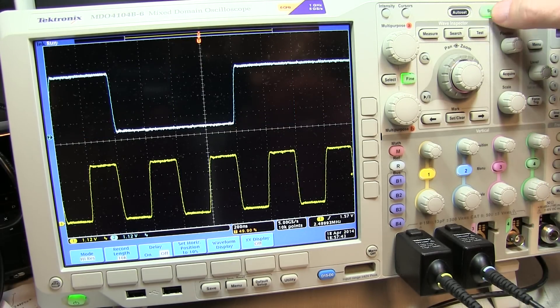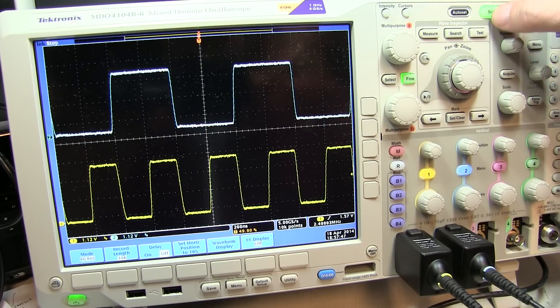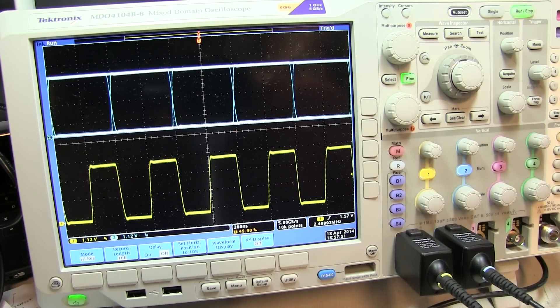If I hit the single button, I can kind of see the same thing. Each time I do a single trigger, I'm grabbing different bits at different points in time. So when running kind of at full speed, all those bits lay on top of each other, and that's what creates the eye pattern.